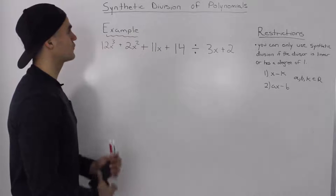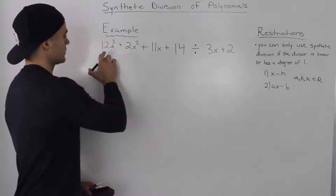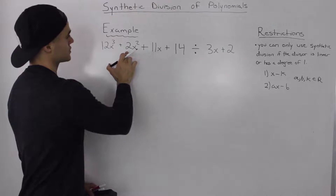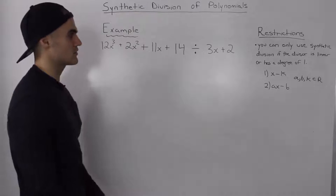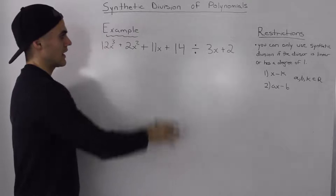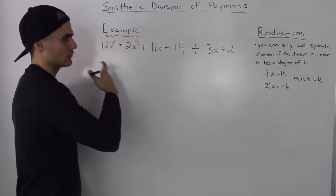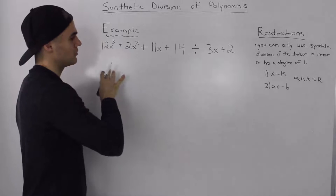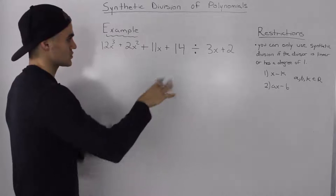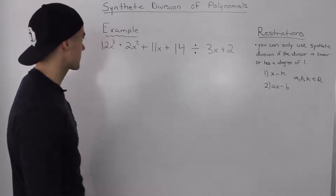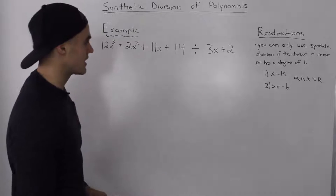Moving on to the next example for the synthetic division of polynomials. We have 12x cubed plus 2x squared plus 11x plus 14 divided by 3x plus 2. We did this same example with long division, so I'll put a link in the description box to that example so you could compare both methods. But let's divide this synthetically.